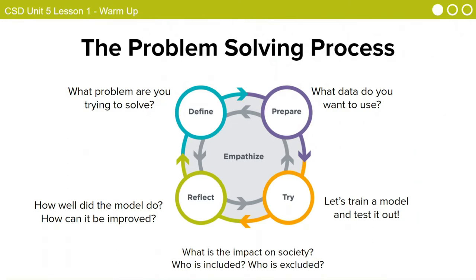Here's the problem-solving process. The first thing is to define: what problem are you trying to solve? Then prepare: what data do you want to use? Then try it out, train the model, and then reflect — how well did it do, and can we improve it? Then we start the cycle over again. Overarching all of this is empathize: what is the impact on society? Who is included, and who is excluded?